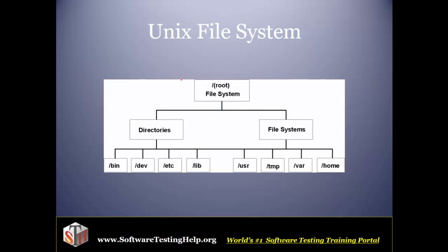This is our Unix file system where we have the root directory at the top and all the subdirectories below it. The reason behind creation of this hierarchical file system is that it helps us to keep all our related files together and separate them from other groups of related files.